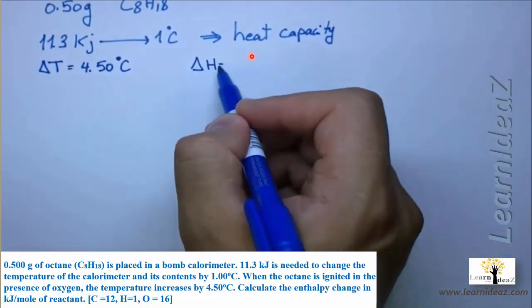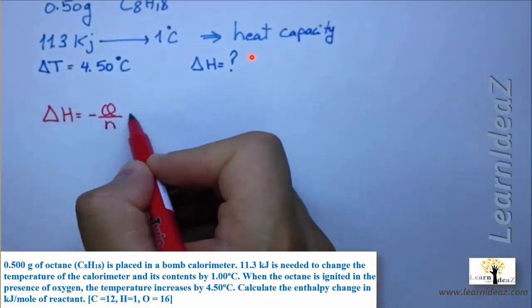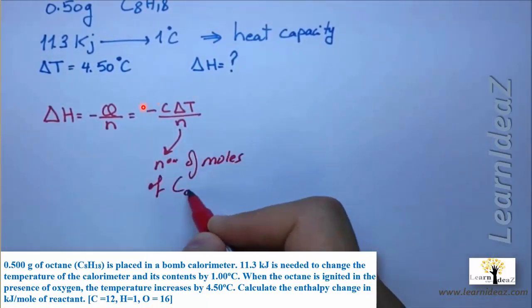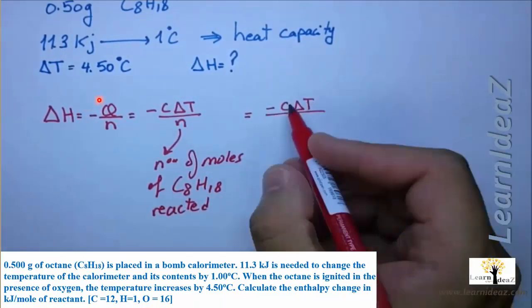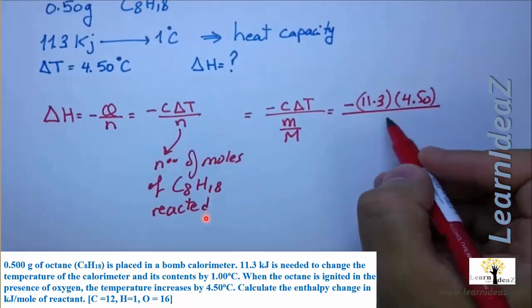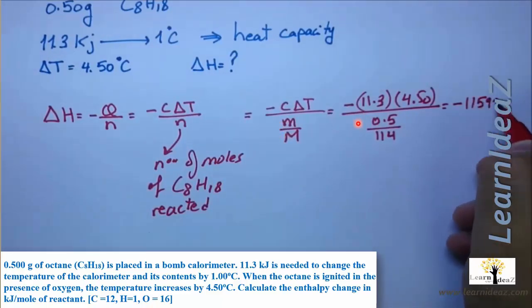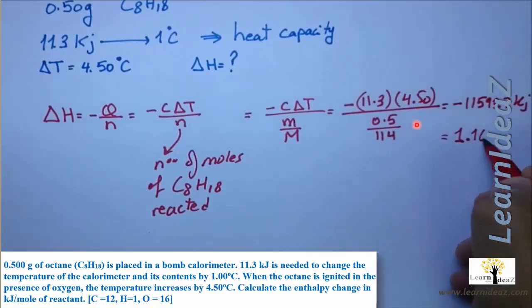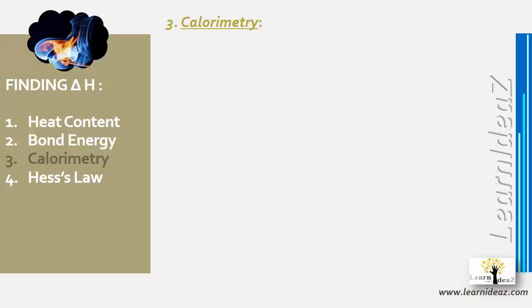We apply: delta h = −c × delta t / n. Since mass is given, n = mass / molar mass = 0.5 / 114. Then delta h = −(11.3 × 4.5) / (0.5/114) = −1.16 × 10⁴ kJ/mol (to three significant figures). The negative sign confirms the reaction is exothermic.